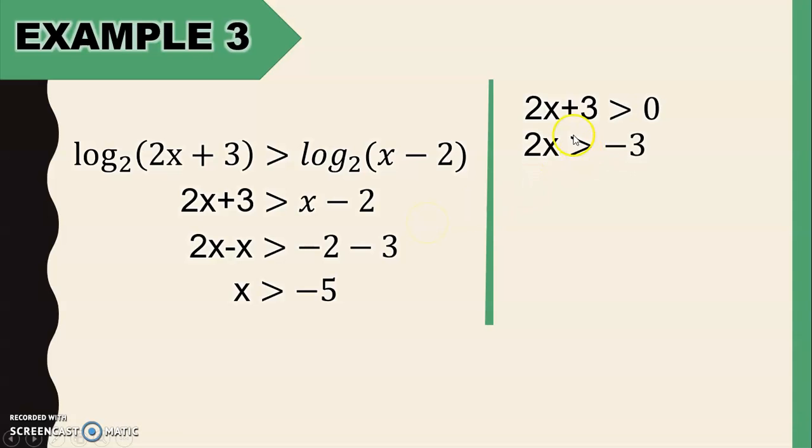So we have 2x plus 3 greater than 0. Solve for x. 2x greater than, transpose 3 on the other side, so it becomes negative 3. Divide both sides by 2. So x is greater than negative 3 over 2.